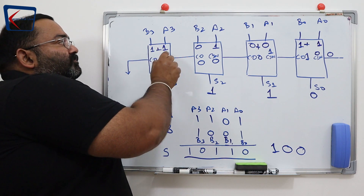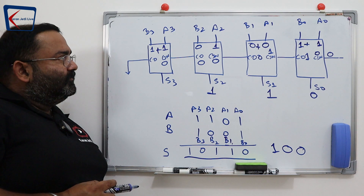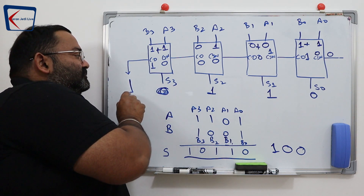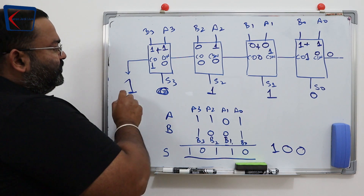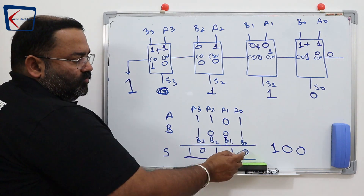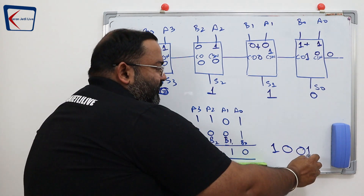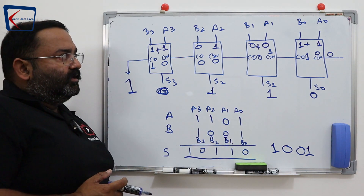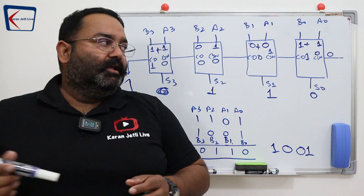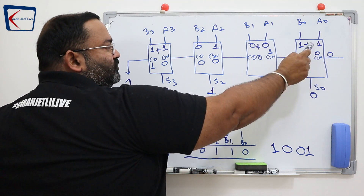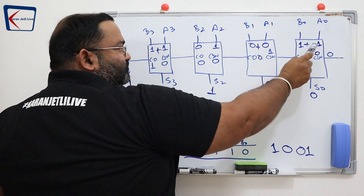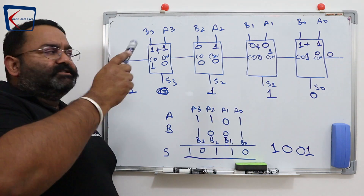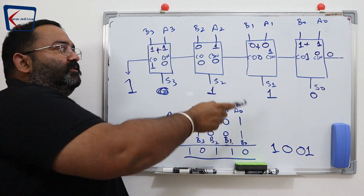Now again we add them: 1 plus 1 gives 01, then 0 plus 1 gives 0 and 1 is the carry out. So the result we are getting here is 1 0 1 1 0, and these are our carry outs which become the carry-ins to the next stage. The first carry-in is 0, one input is A and the other is B — we add them, write the sum here and carry out there, and that same carry out becomes carry-in to the next adder.